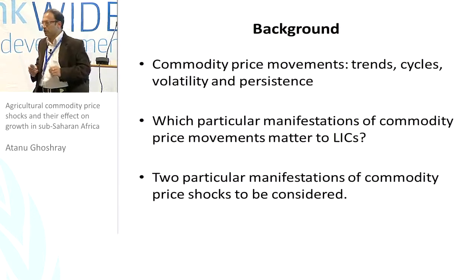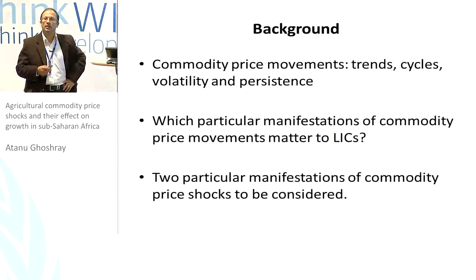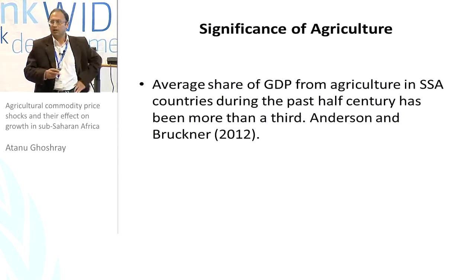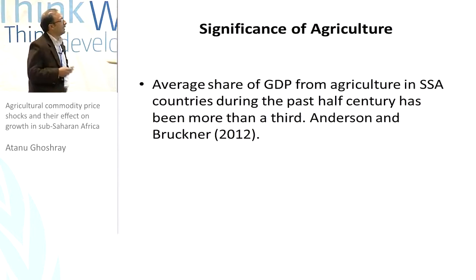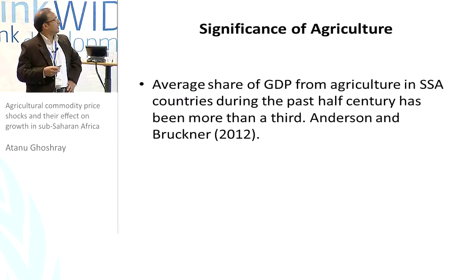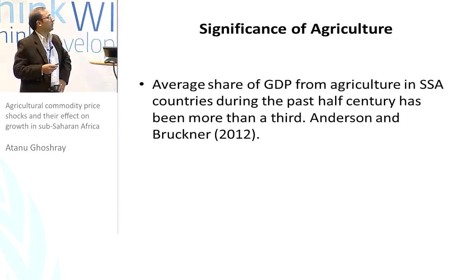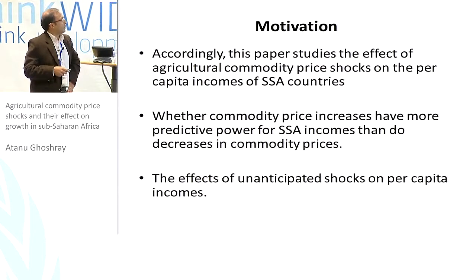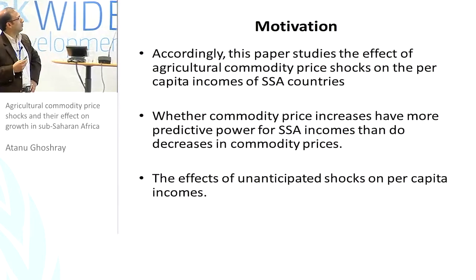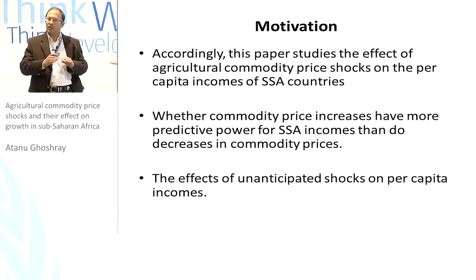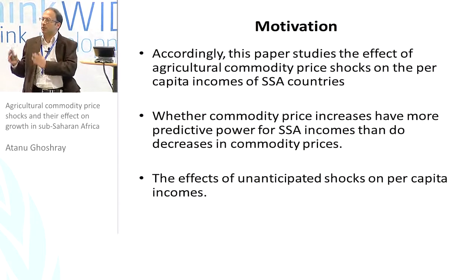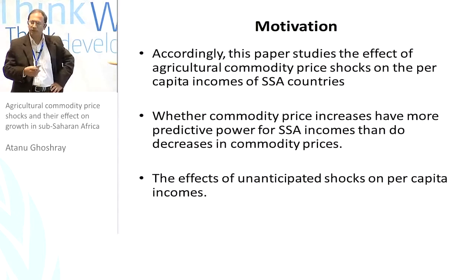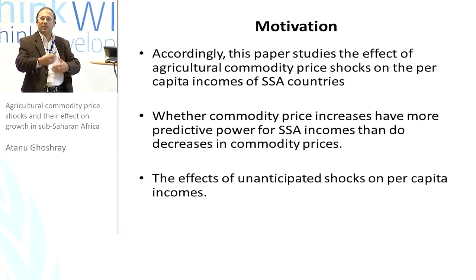What we do in this paper is choose two particular manifestations of commodity prices which have been used in the literature but for different primary commodities. We focus on agricultural commodity prices, using the work of Anderson and Bruckner, who found that the average share of GDP from agriculture in sub-Saharan African countries has been considerable. We separate shocks into positive and negative, including sustained positive and negative shocks, and then do simulations to find out how output changes over time.